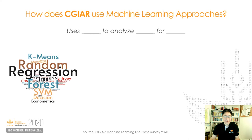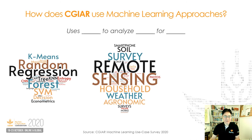Here you can see there are a lot of different analytical methods being used, from random forest, regression, classification, and neural net. Our colleagues said they need to use these methods to analyze large volumes of data from, for example, satellite remote sensing, household surveys, agronomic trials, and soil and weather data.